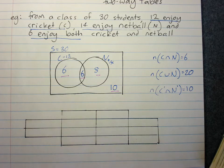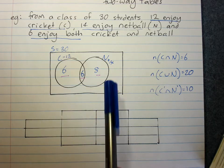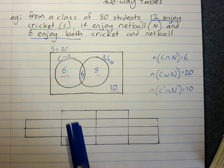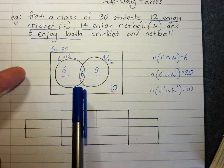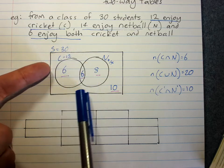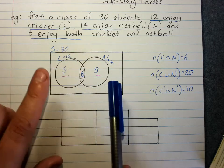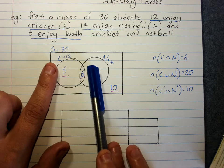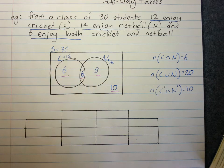From that, if asked for the number in N only, that would be 8. If asked for the number in C, that would be 12. So there is a difference between C only and C — C refers to everyone who likes cricket including those who like both, while C only excludes those who like both. From that we can also calculate probability.